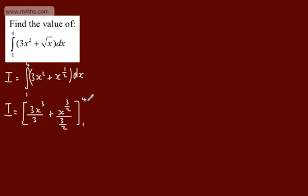So we're going between the limits of 1 and 4. Just tidying this up, we can say that i will be equal to x cubed, plus 2 over 3, x to the power of 3 over 2. And we're going to now sub in these limits. What we do is evaluate 4, we evaluate 1, and whatever we get when we evaluate 1, we subtract that away.